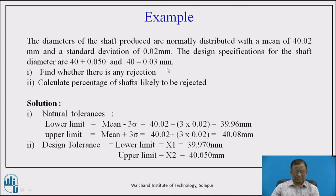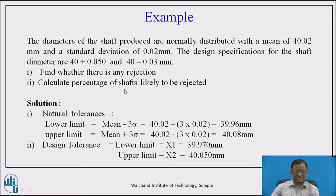Now, as per the design tolerance requirement, the shaft is manufactured on a process with its own natural tolerance. The question is: will there be any rejection? That is, can all produced parts maintain dimensions within the designer's specified limits? Because design tolerance and natural tolerance are different. So first we decide whether there is rejection, and if so, what percentage of shafts are likely to be rejected.